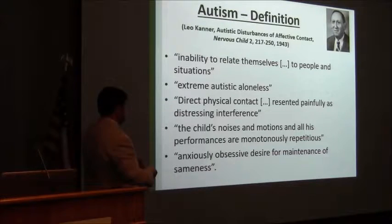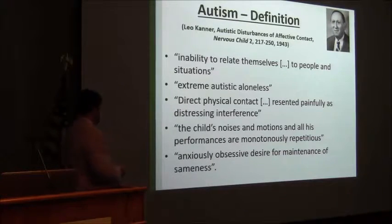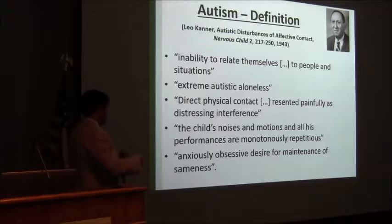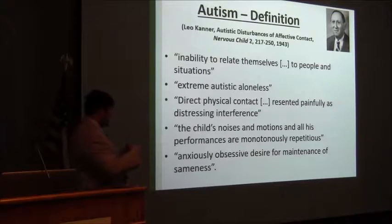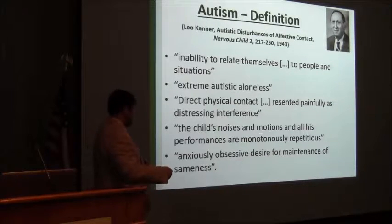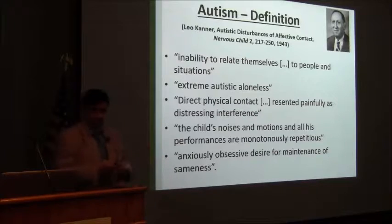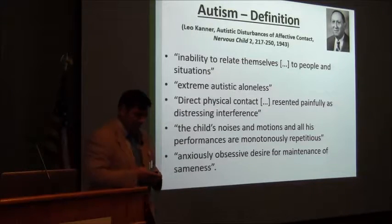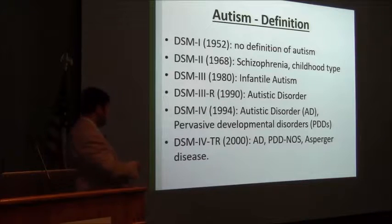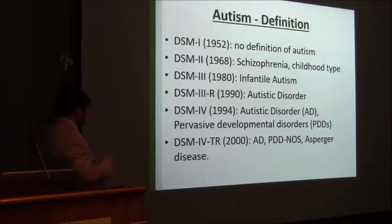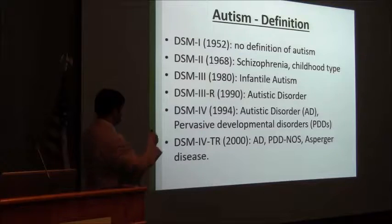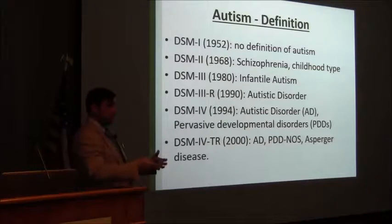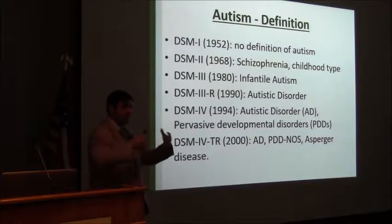Here are some of the words used in the first paper from Dr. Kanner in 1942. We recognize something about the deficit in social production, the problems and abnormal responses to sensory stimulation, or the repetitive and stereotyped movements. But the definition of autism has changed in every edition of the Diagnostic and Statistical Manual for Mental Disorders — you see that there are different definitions, not just the name, but even the criteria for the diagnosis.